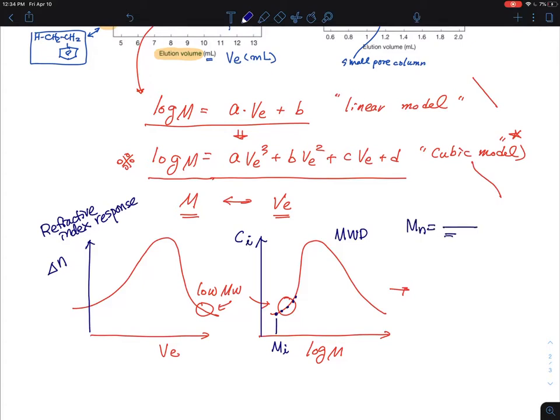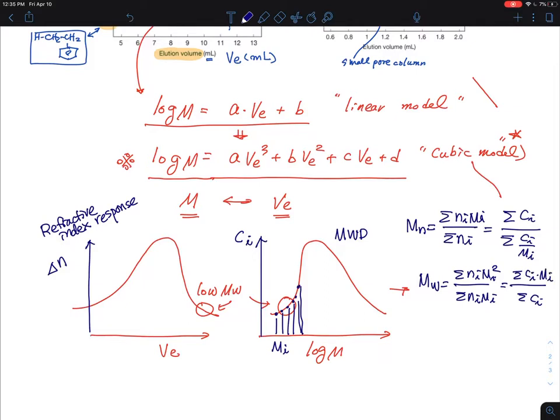Bottom line is, you got this mi versus ci information from the GPC, and then as you know, Mn, which is Σni·mi / Σni. All you got to do is, using this ci information divided by mi, that you find out from this, each data points, which is thousands of data points that you can find out, and then this is ci, so you can calculate from there. And then Mw, which is Σni·mi² / Σni·mi, that is same as for you to say, sigma of all the heights that you see, that's all the heights, and then this is ci times mi, so that's the weight average molecular weight.